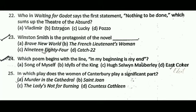Next question: Winston Smith is the protagonist of the novel blank. The correct answer is C, that is 1984.